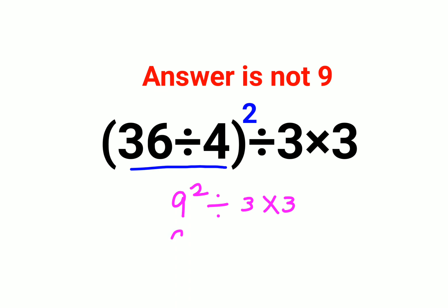So a lot of people thought that 9² divided by 3×3 equals 9, so the answer comes out to be 9. But that is incorrect, like I said.